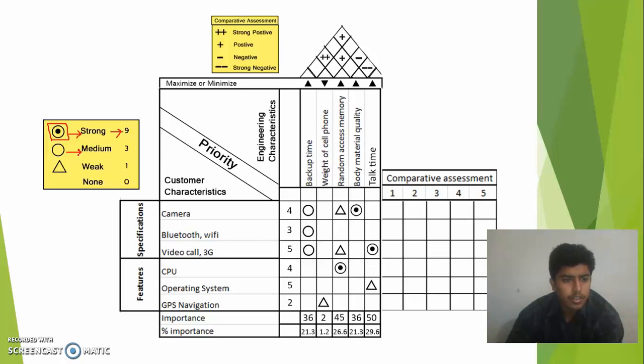The circle will denote the medium relationship and has a score of 3. Triangle will show that there is a weak relationship and has a score of 1. And if there is nothing that means 0. So the camera and the backup time has a medium relationship, that means it is a score of 3.